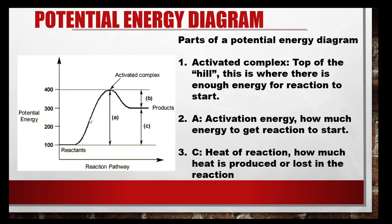Now let's go over a bit about the potential energy graph — you will need to know how to read these graphs. The activated complex is the top of the hill; this is where there's enough energy for the reaction to start. Activation energy is how much energy is needed to get a reaction started — that is labeled A. It starts here at the reactants at 100, and we have to get to 400 to make the reaction begin. So I have to add 300 joules of energy to go from 100 to 400. C is what we call the heat of reaction — it's the change in heat when we go from reactants to products. You can have a positive or negative one. This one is positive: we go from 100 to 300, so the heat of reaction is 200.